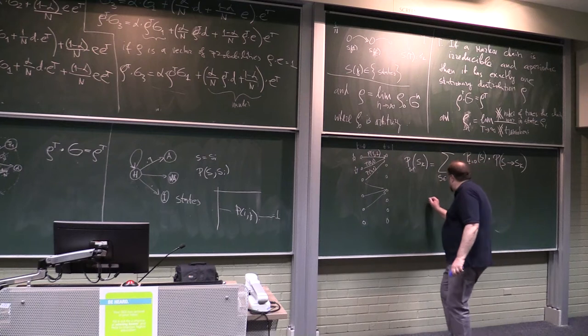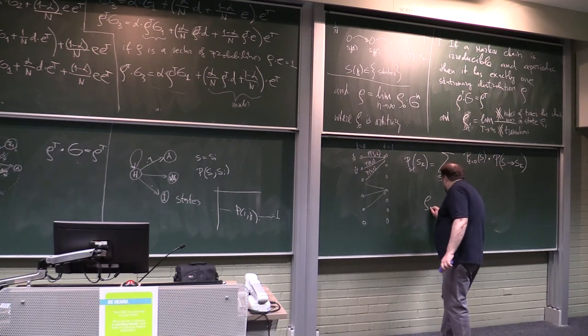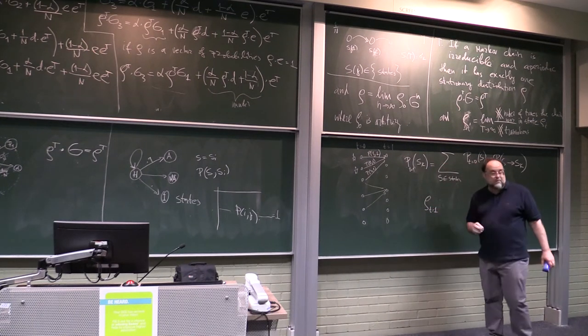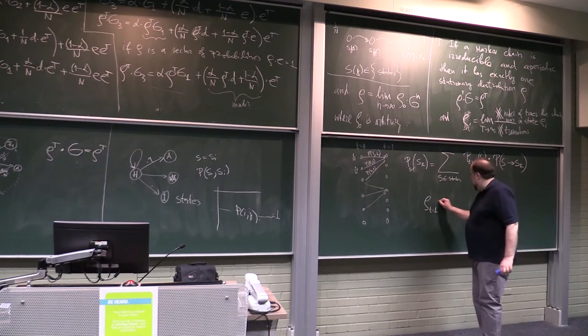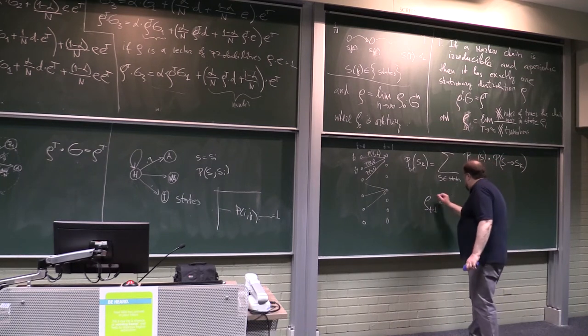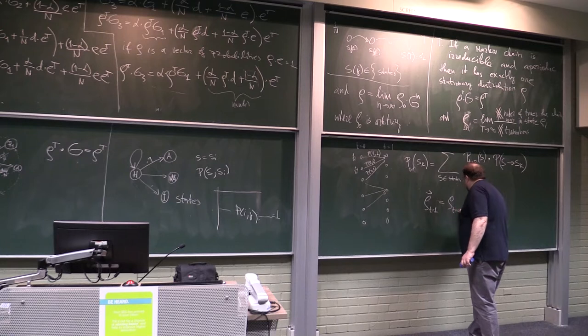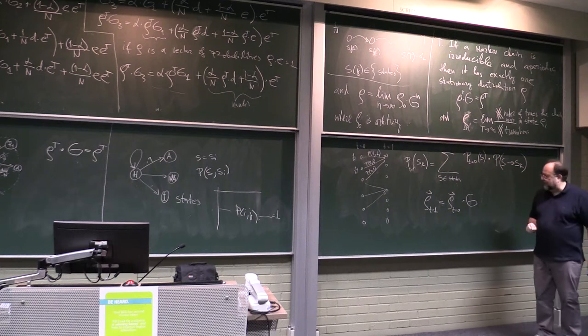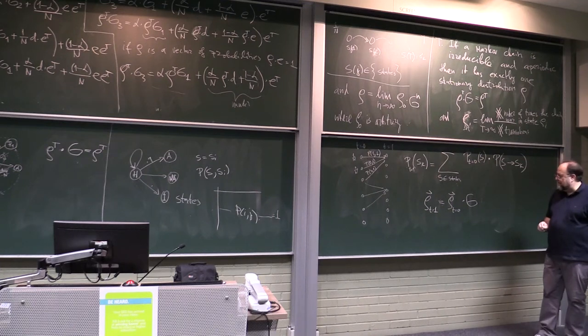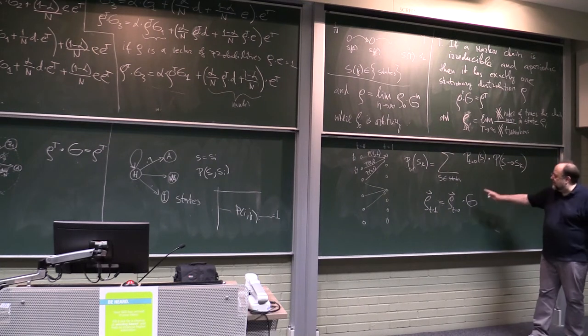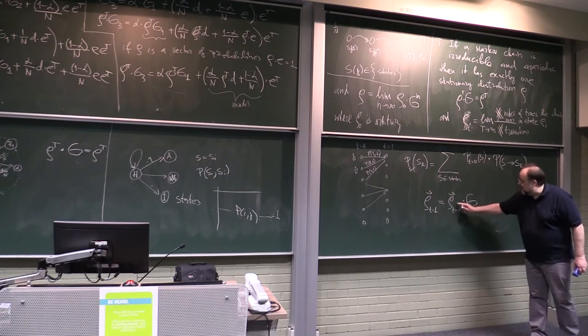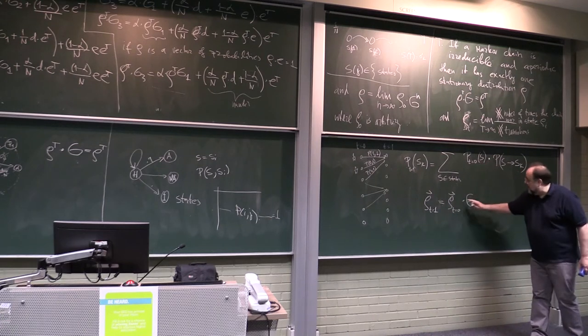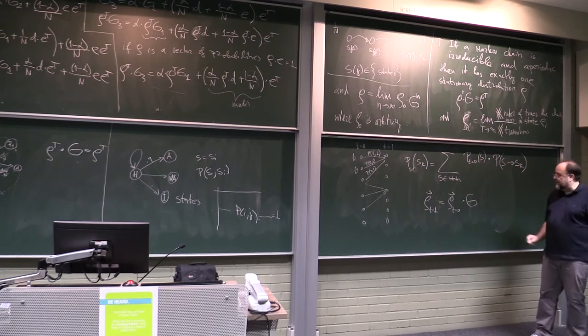This means that ρ at t equals to 1, which is approximation of our ρ, is equal to ρ when t is equal to 0 times the matrix of transitions. Right? This will exactly multiply each probability with the probability of transition.